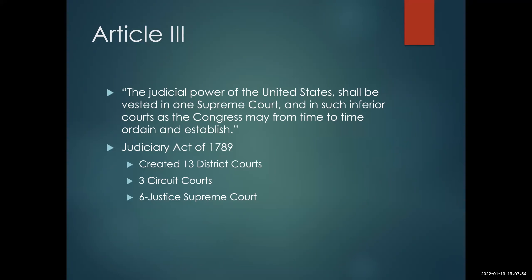It says the judicial power of the United States shall be vested in one Supreme Court and in such inferior courts as the Congress may from time to time ordain and establish. One thing to notice is that the judicial power of the United States is not actually defined — it's pretty vague. So we end up relying a lot on the Federalist Papers and a general understanding of what courts did in the late 1700s to inform our interpretation of the judicial power. The other thing to note is that Article 3 creates a Supreme Court, but it does not create any other federal courts.